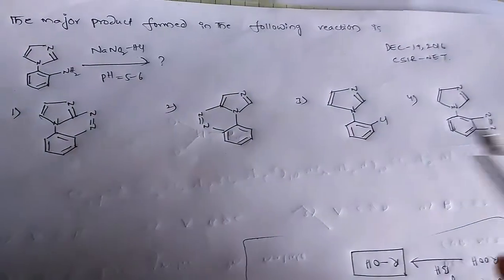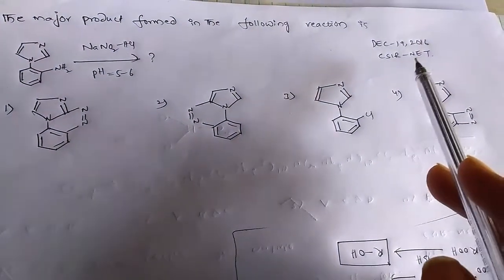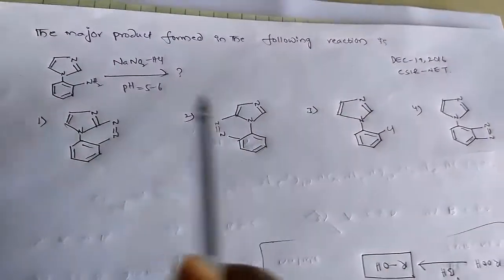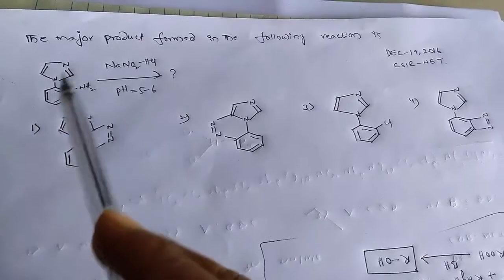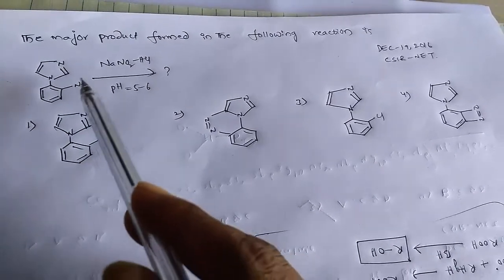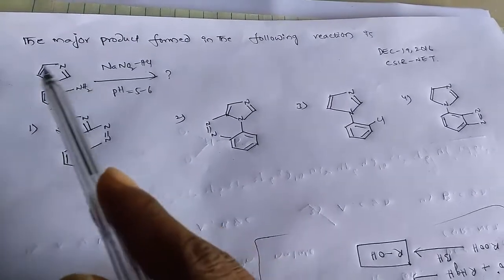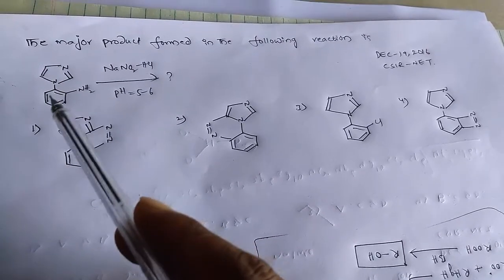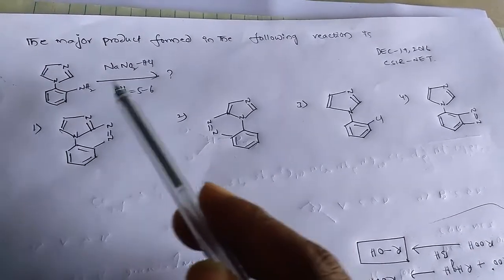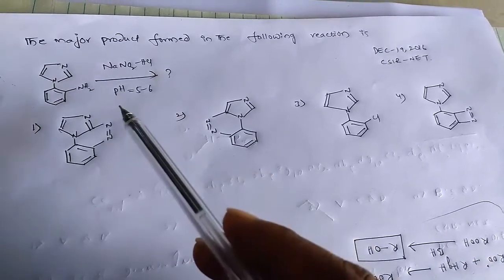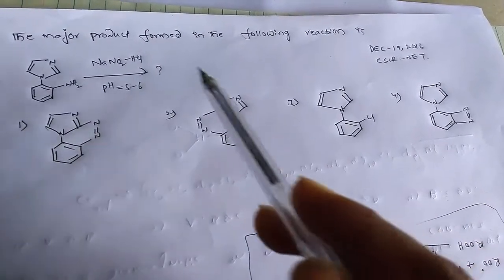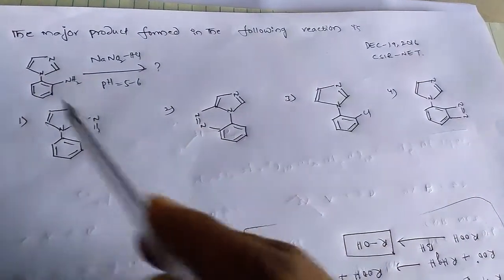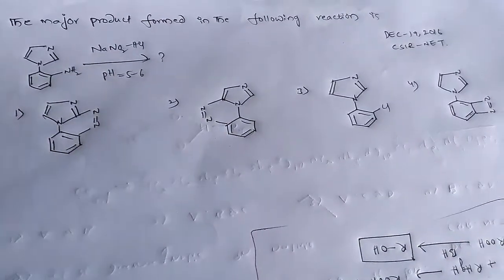Hi, this is Ranjiri. This question appeared in December 19, 2016 CSIR NET. The question is: the major product formed in the following reaction is... This is the reactant and it has an amino functional group and imidazole ring on this benzene ring. It is reacting with NaNO2/HCl at pH 5-6. We have four options and we should check which is the right product of this reaction.